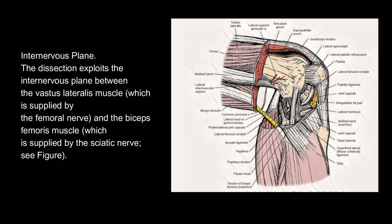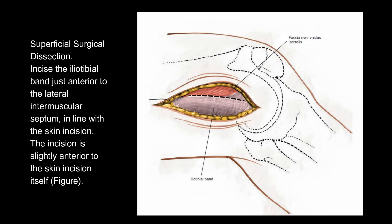Internervous plane: the dissection exploits the internervous plane between the vastus lateralis muscle, which is supplied by the femoral nerve, and the biceps femoris muscle, which is supplied by the sciatic nerve.